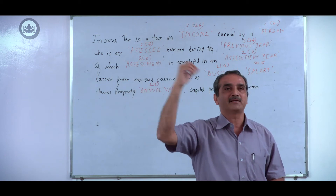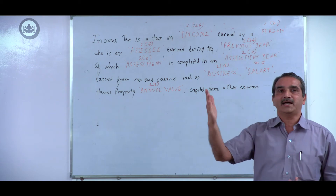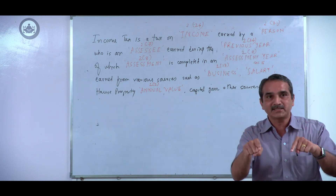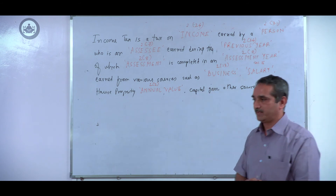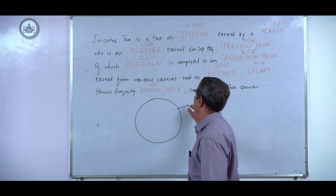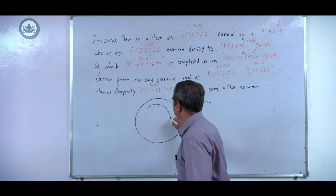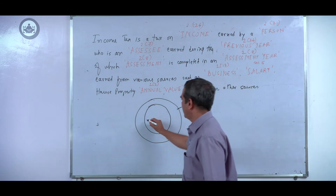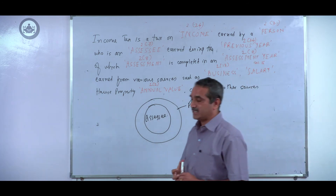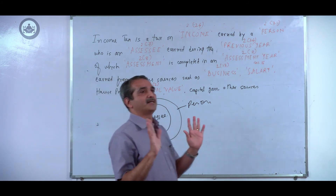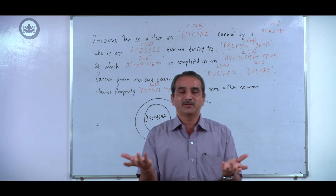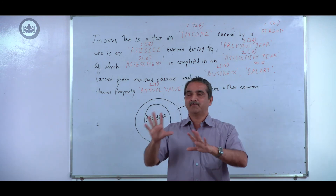Having divided all assessable entities under various heads in the definition of 'person,' are all persons liable under the Income Tax Act? The answer is no. Pictorially, 'person' is the universe, whereas a person concerned with income tax is a subset — that is an assessee. Every assessee is concerned with income tax, but every person need not be. For example, students in TYBcom with no income are persons but not assessees.